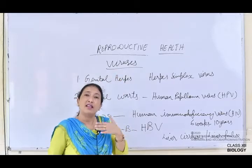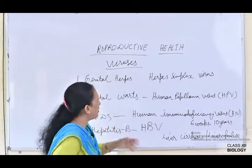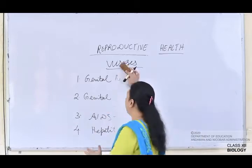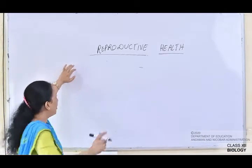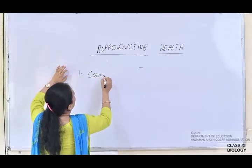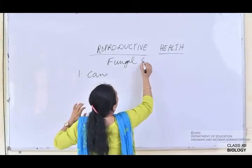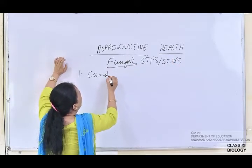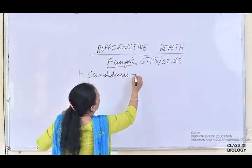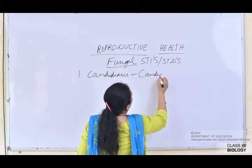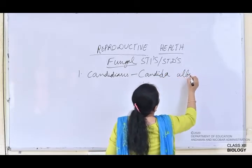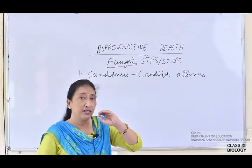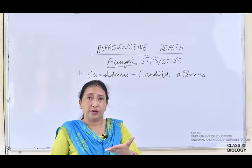STDs are also caused by fungus and protozoa, as mentioned in your book. The fungal STI is candidiasis, and the causative organism is Candida albicans. The symptoms of candidiasis include itching sensation in the urethra in males and in the vagina in females.